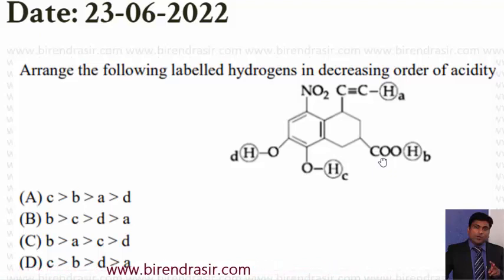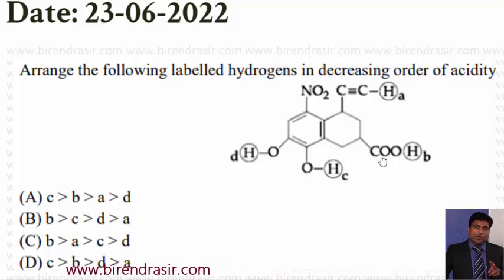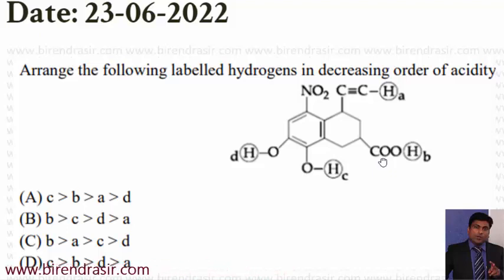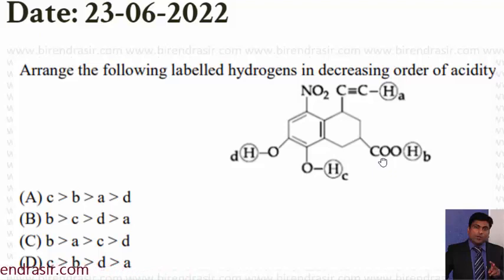So, we will keep this H as number one. Now, check the options where B is given as number one — that is B and C. So, you will eliminate option A and option D.